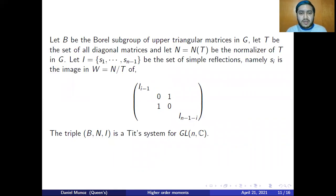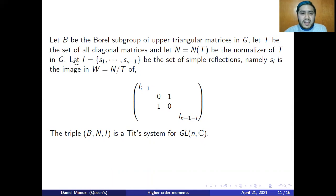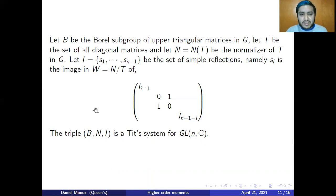I have proven the Bruhat decomposition theorem in the general form. Now I want to introduce the Bruhat decomposition for GL(n,C). In order to do that, I need to set up a Tits system for GL(n,C). I'm going to take B to be the Borel subgroup of upper triangular matrices, T to be the set of diagonal matrices, and N to be the normalizer of T in G. I'm going to take I as {S1, ..., S_{n-1}} as the set of generators, where Si is the image in the Weyl group of a matrix like the identity but with two off-diagonal elements swapped. It can be proven that this triple B, N, I is a Tits system for GL(n,C); for the proof, I refer to the book by Daniel Bump.